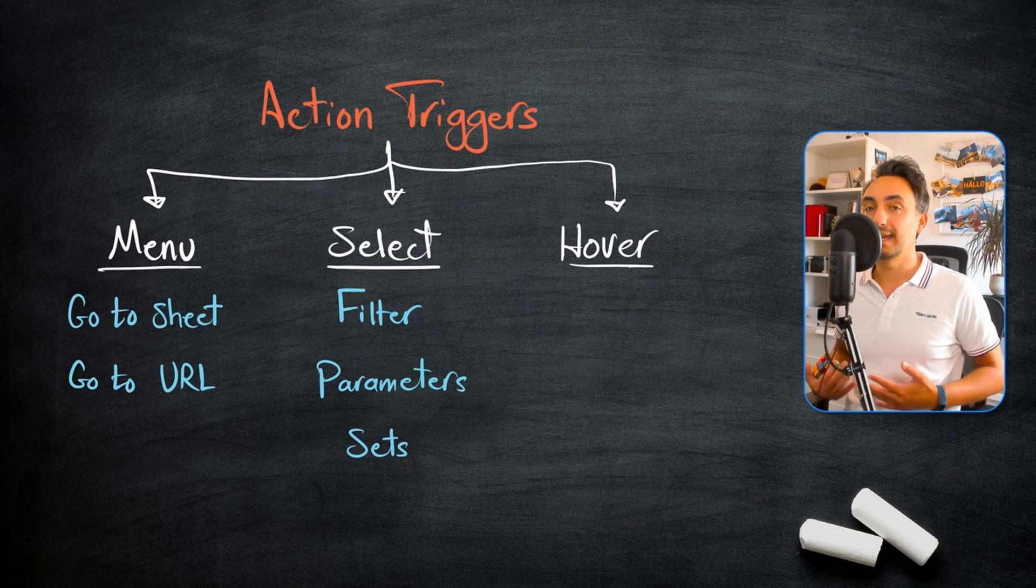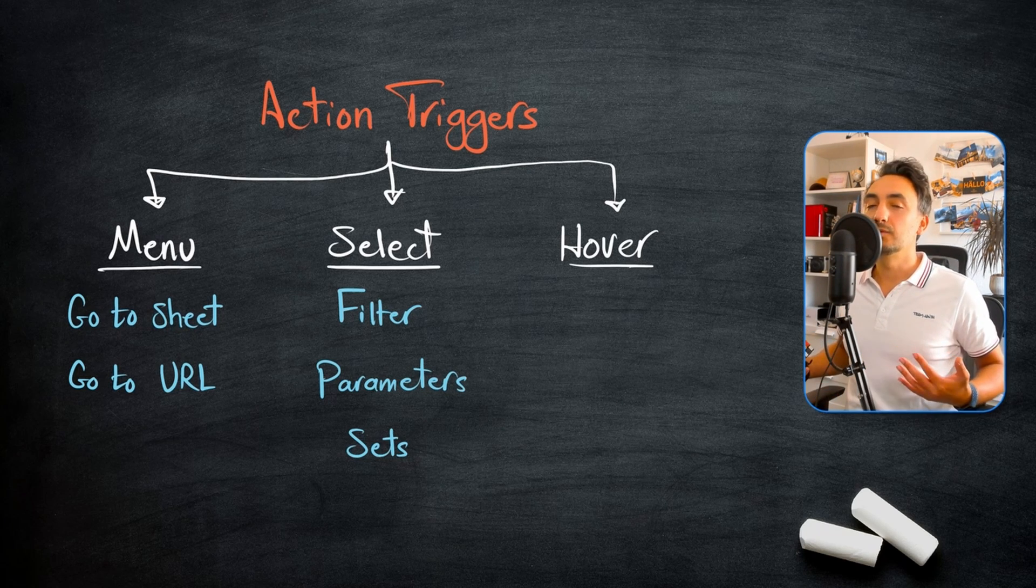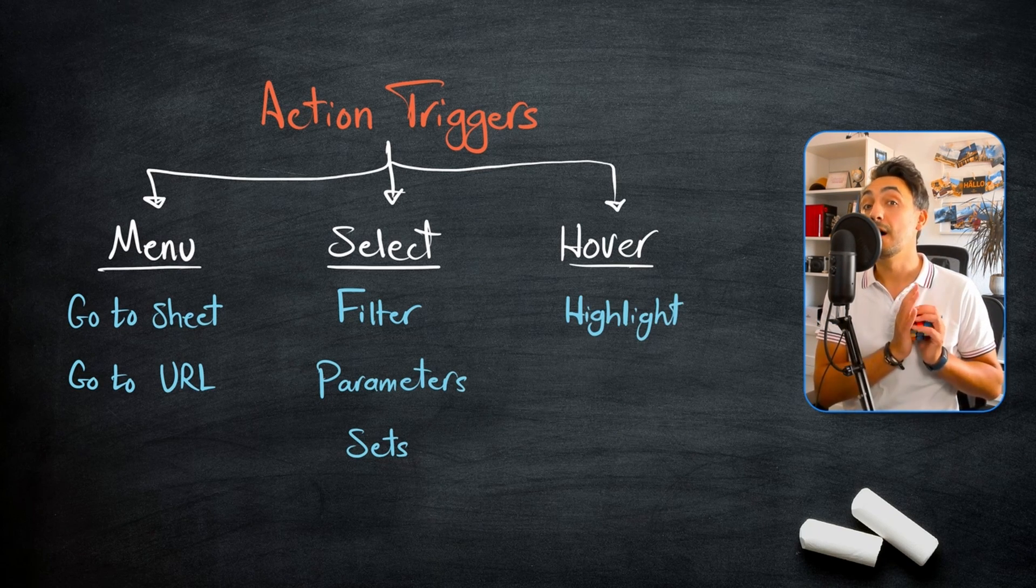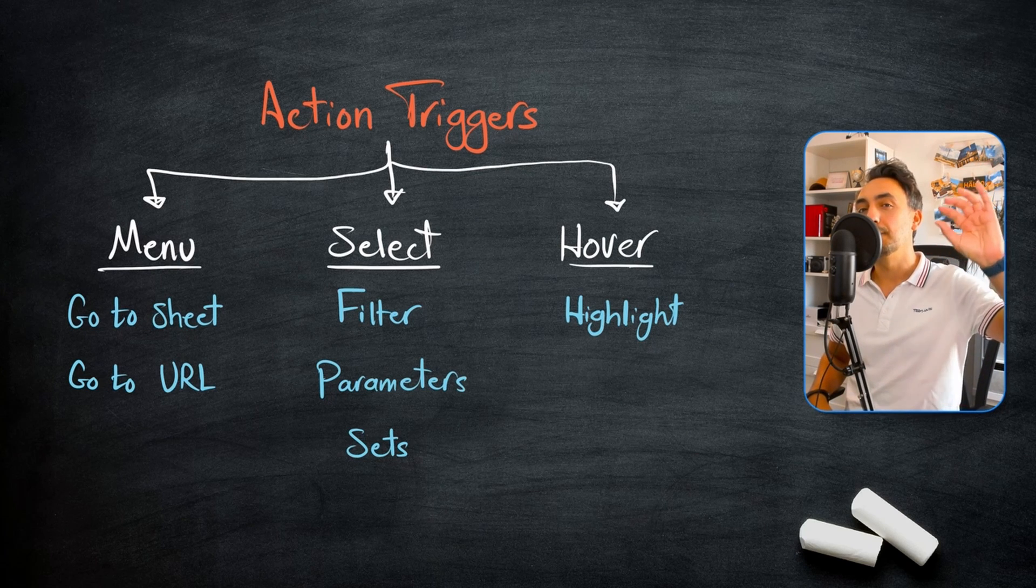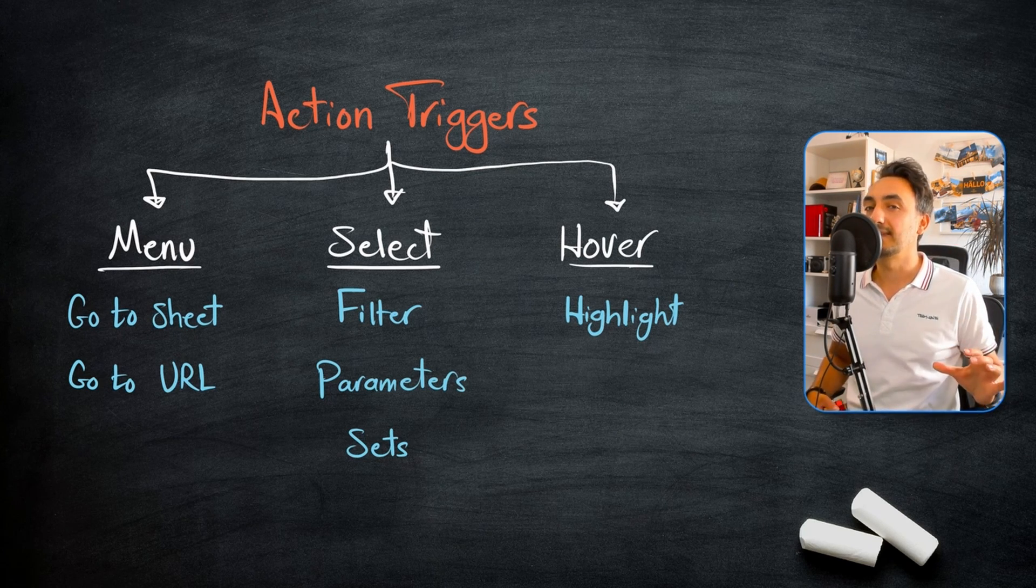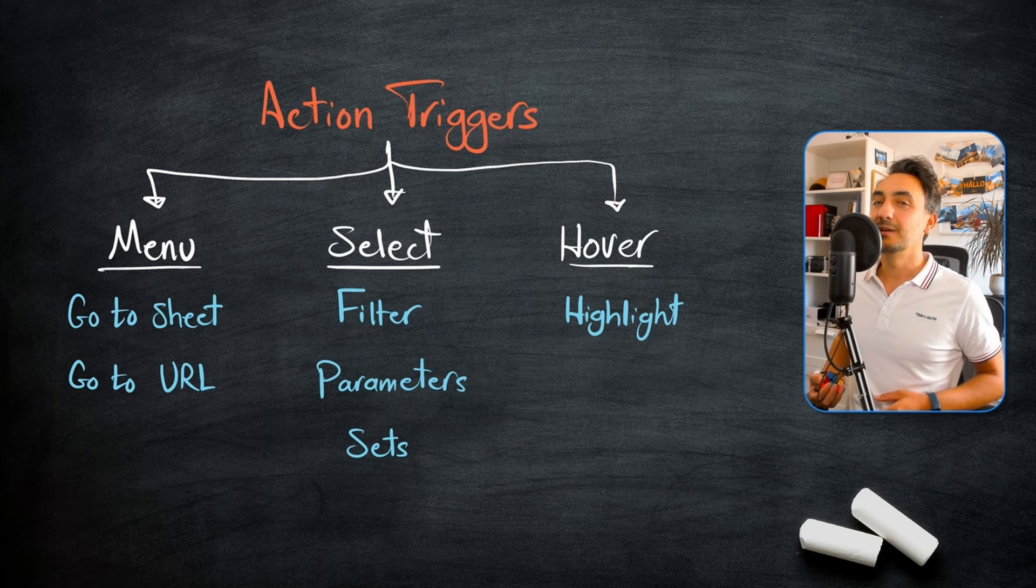If you are using a quick action, for filter action I usually go with select. And for the last one, the highlights, I really recommend you to go with the hover. So as the users are mouse hovering inside one worksheet, the other worksheet is as well interacting. It's really nice and more modern.